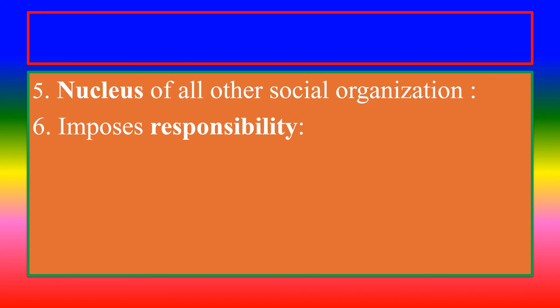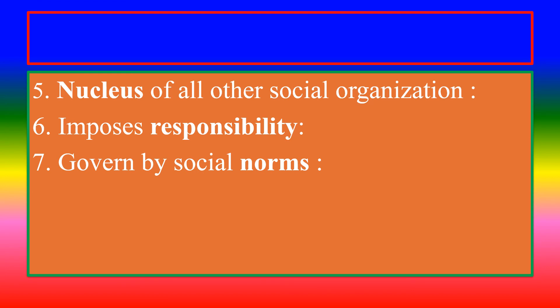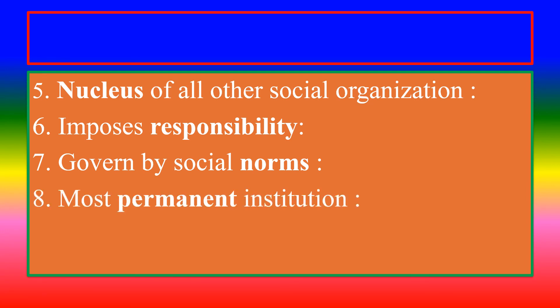Sixth characteristic: family imposes responsibility — family members define their responsibilities, for example the responsibility of father and mother. Seventh: family is governed by social norms, meaning regulations; every family has its own unique norms. Eighth: family is the most permanent institution — compared to other social institutions, family is the most permanent and is difficult to dissolve due to the emotional attachment of family members.